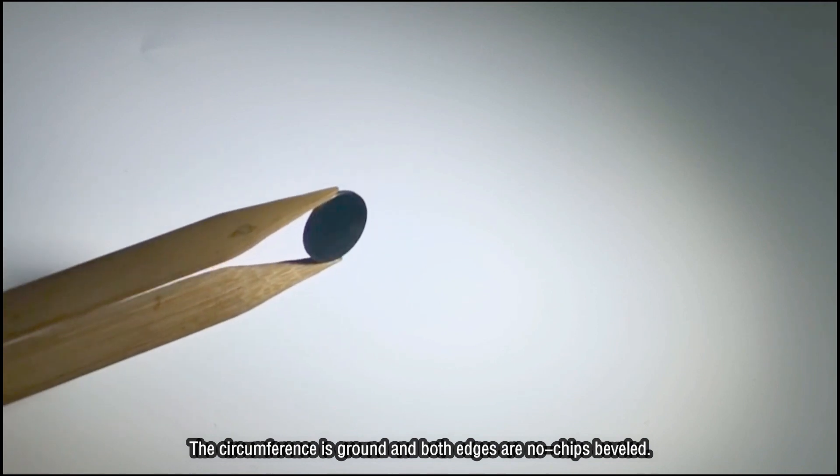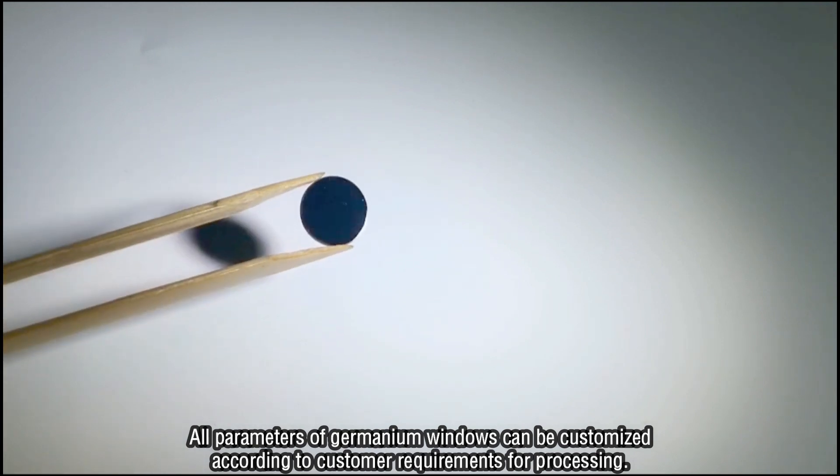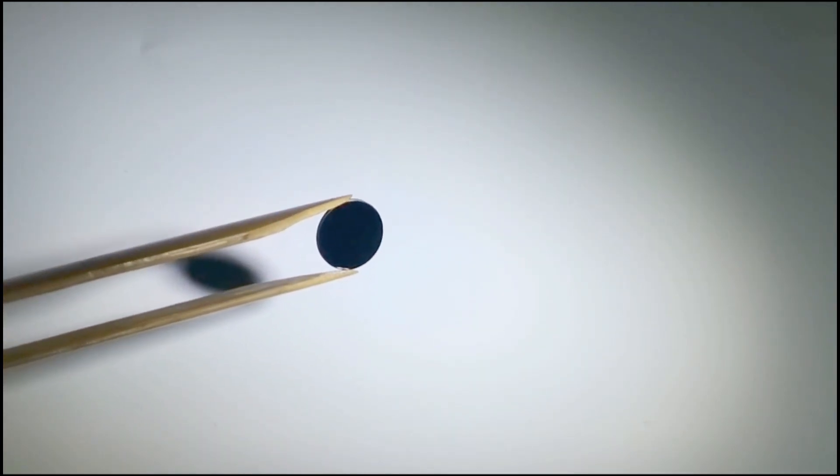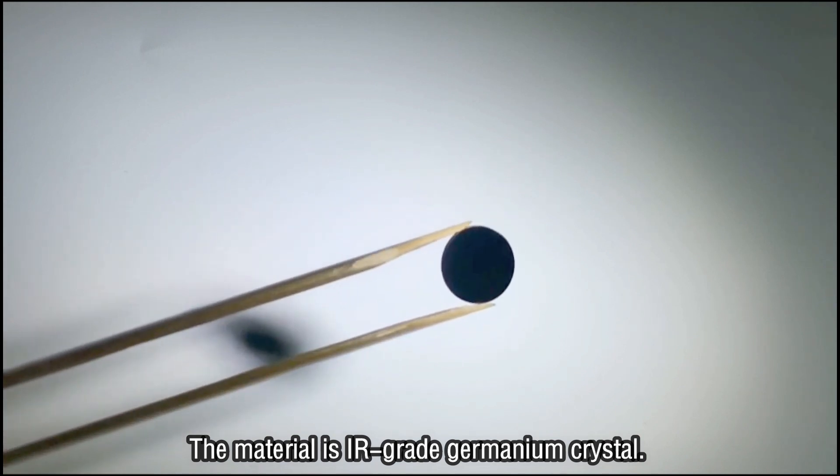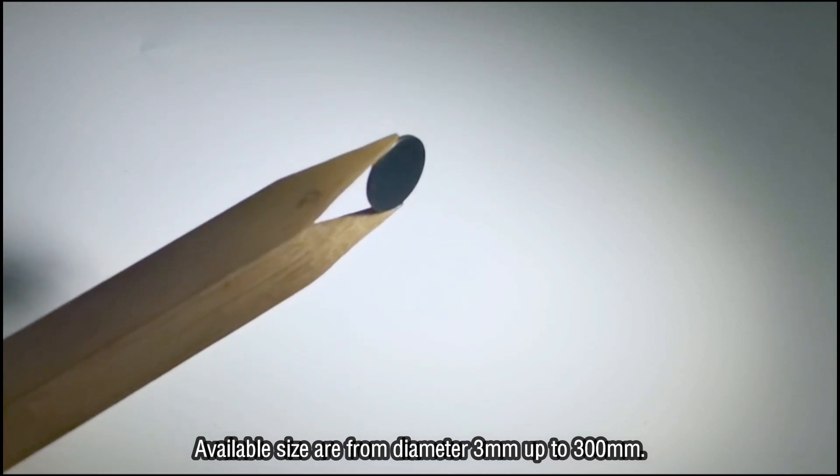The circumference is ground and both edges are no-chip beveled. All parameters of Germanium windows can be customized according to customer requirements for processing. The material is IR-grade Germanium crystal. Available sizes are from diameter 3mm up to 300mm.